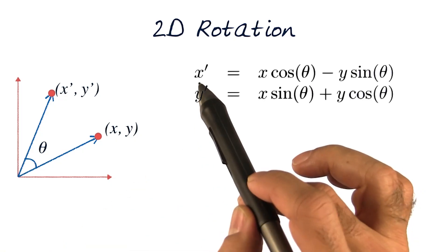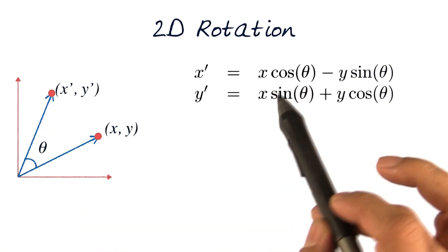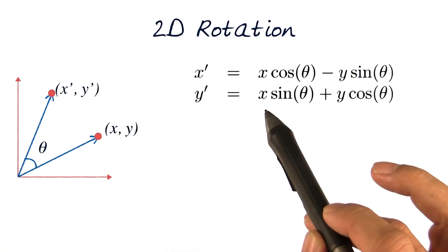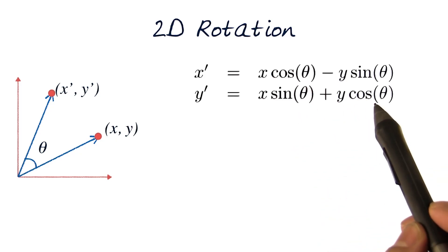This would say that x prime would be computed by taking the cosine of angle theta here with x, the original x, minus y sine theta. And similarly, y prime would be given by x sine theta plus y cosine theta.